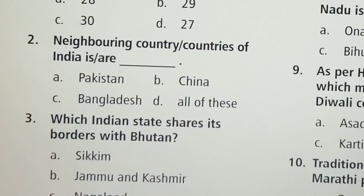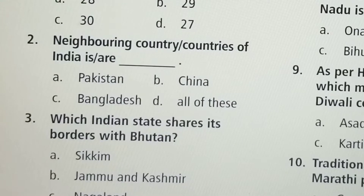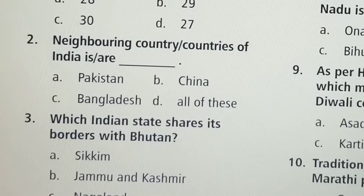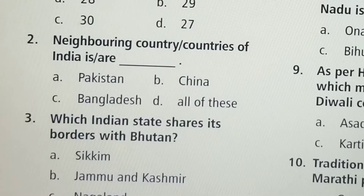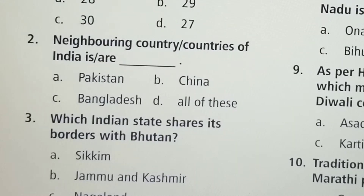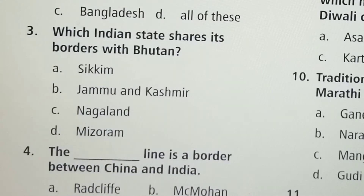Next question: Neighboring country or countries of India is or are — Option A: Pakistan, Option B: China, Option C: Bangladesh, Option D: All of these. Option D, all of these, is the correct answer.